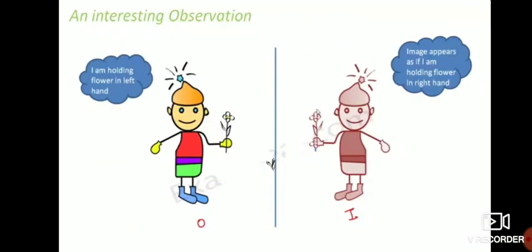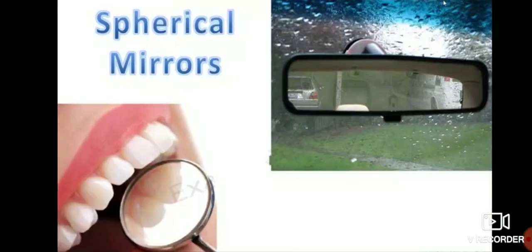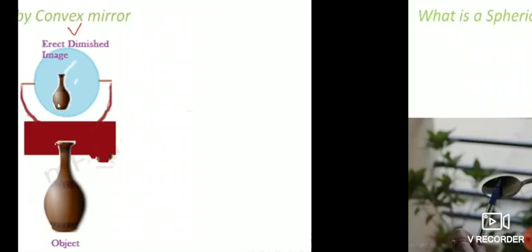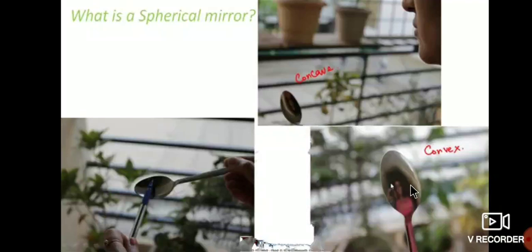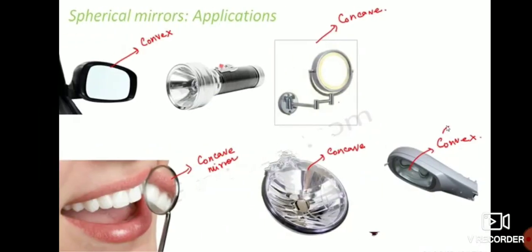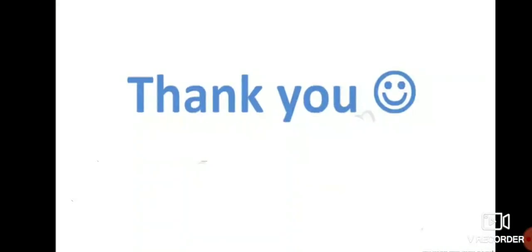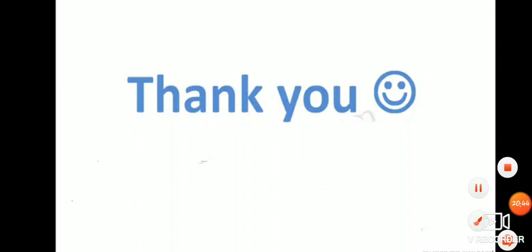Remember: in a plane mirror, the image appears in the opposite direction — left appears as right. Dentists use a concave spherical mirror because it enlarges the image. Convex mirrors diminish the image and are used in vehicles. Try to observe your face in the concave and convex sides of a spoon. If you have any doubts, note them down and we shall discuss in the next Google Meet class.